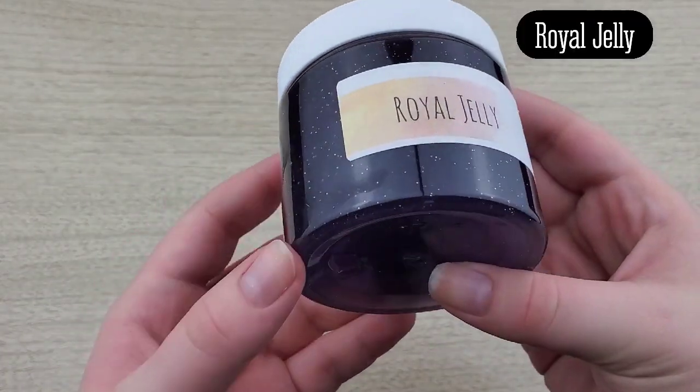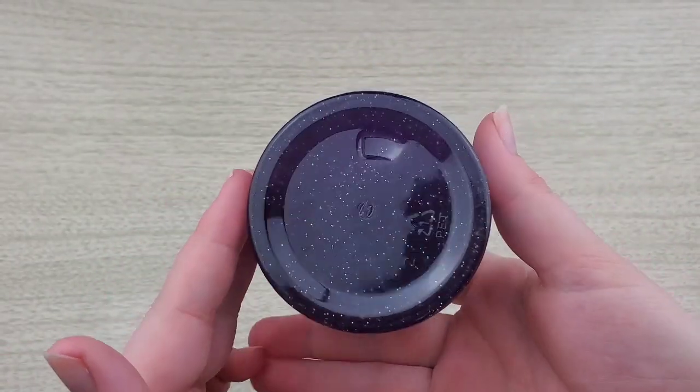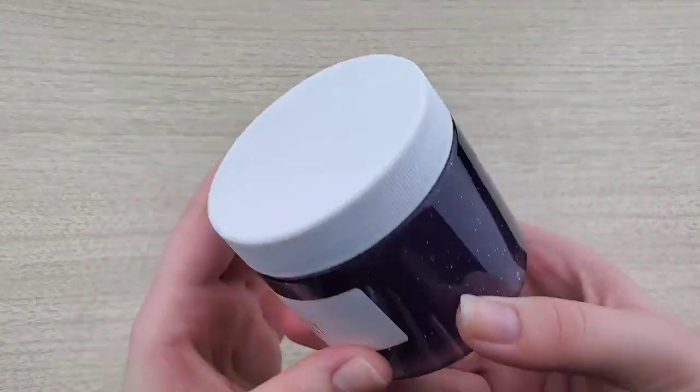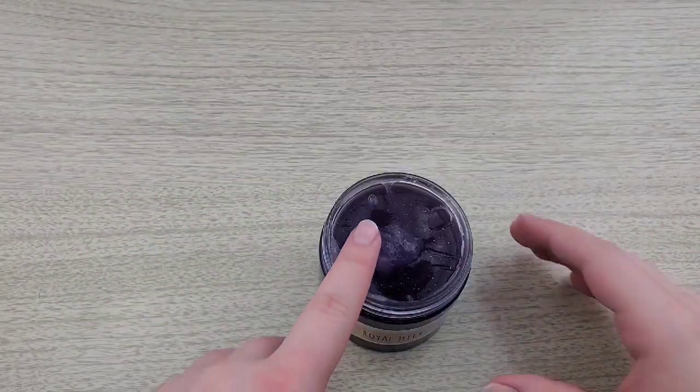This next one is royal jelly. And it is so beautiful. It is a dark purple color with some iridescent glitters in it. It's so beautiful. I love this one. So nice.